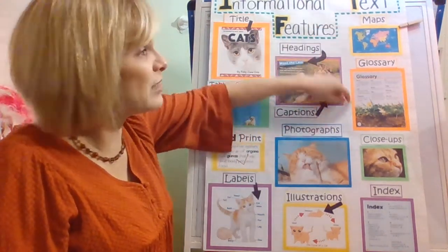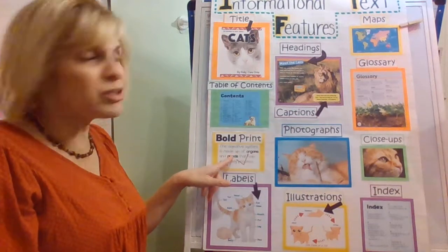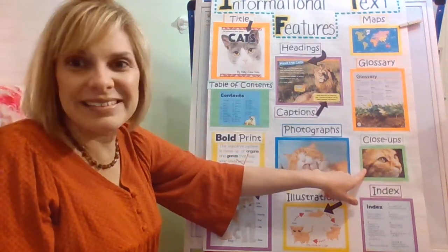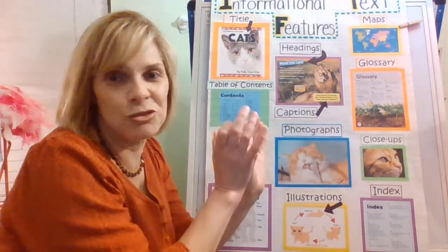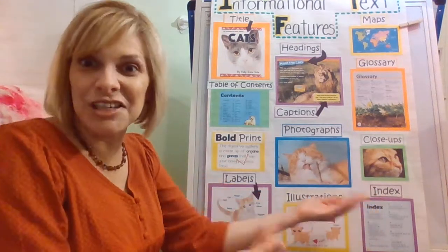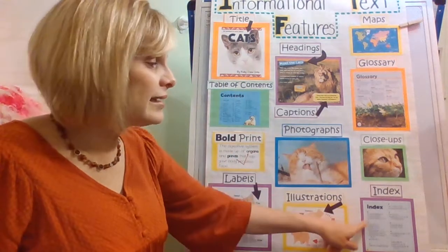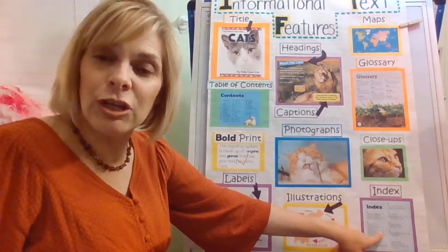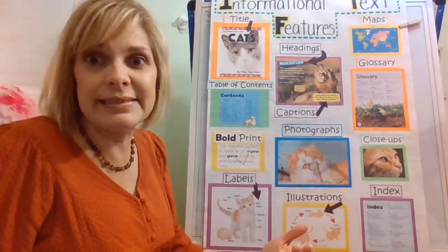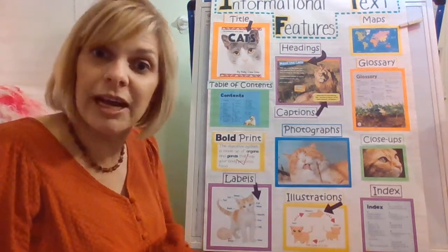Maps show you where things live. A glossary will tell you what words mean — sometimes an author will take words that are in bold and put them in the glossary so you can see what they mean. Close-ups are when the author takes something and zooms in, almost like it's under a magnifying glass. And then there's an index — it's at the end of the book. An index has key words important to the title, and you can find the page numbers where they talk about it. For example, if the book was about lions and I want to know what a lion eats, I might look up the word diet in the index and go straight to that page if I didn't want to read the whole book.